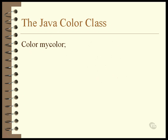Just like any other object, to create a color object you first need to declare a reference to hold its address, which you can do on the same statement you use to create the color, or you can do it ahead of time, like the line of code shown here.